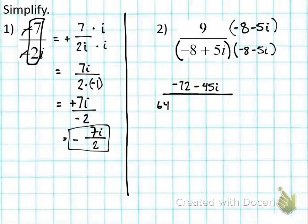And this is a difference of squares. So remember, you just have to square both terms. So 5 times 5 is 25. i times i is i squared. And then we put the negative sign in the middle. Simplifying this, i squared becomes -1. This is really like saying -25 times -1, which is +25. So we're going to rewrite this. We have -72 - 45i all over 64 + 25.